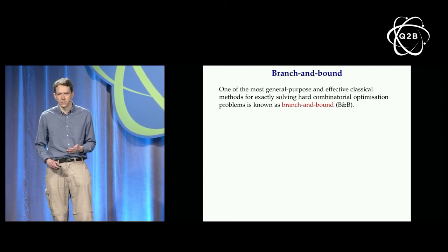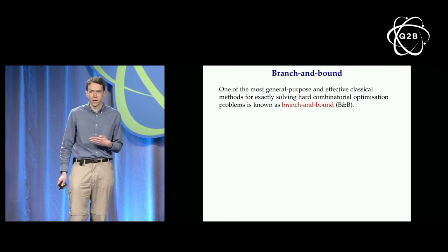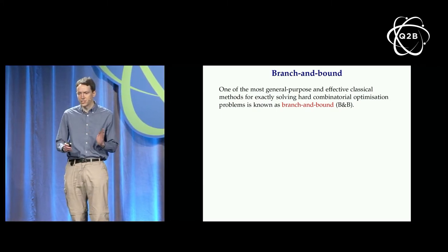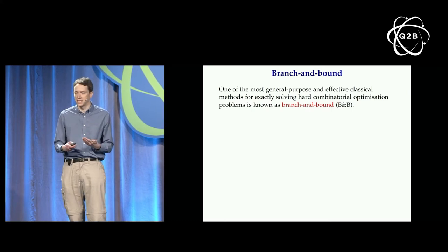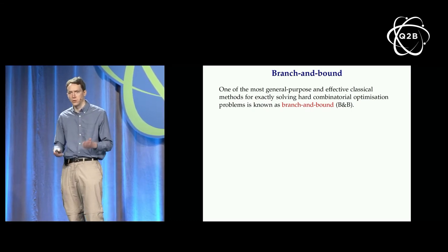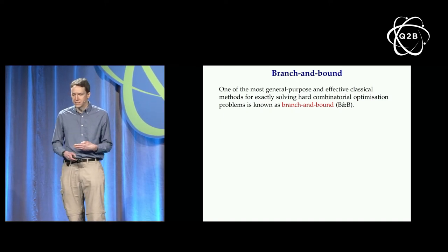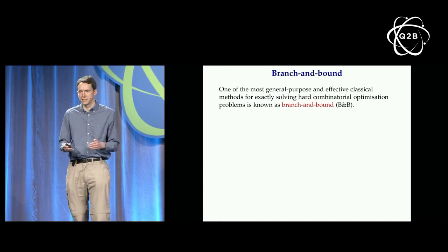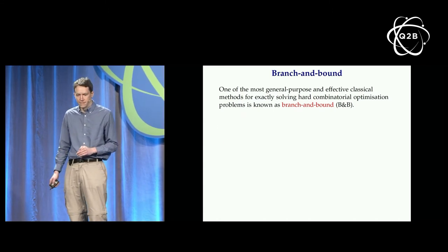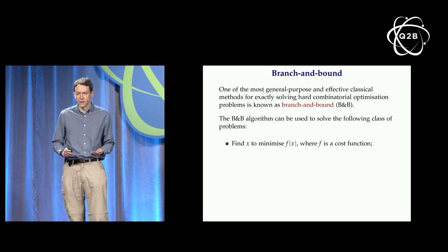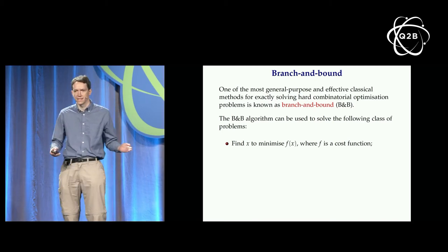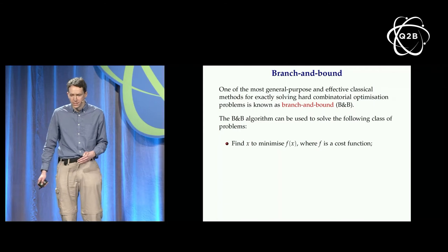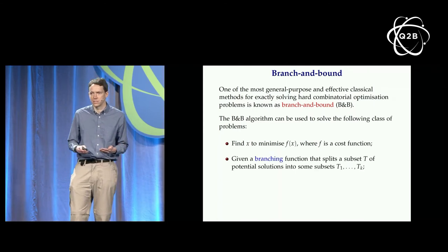The class of classical algorithms I'm interested in is known as branch and bound algorithms — a very general-purpose way of solving hard optimization problems. In some ways it's the simplest idea beyond trying every possible solution one after the other, so it's not surprising it's used in many different contexts and implemented in many software packages. Basically, we want to solve a minimization problem: find x to minimize some function f(x), where f is some kind of cost. We use subroutines to help do this.